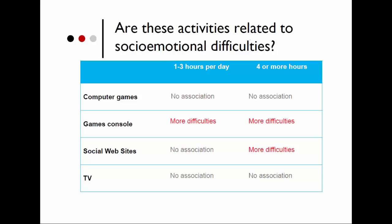Looking at socio-emotional difficulties — the low wellbeing part of the scale — we see different patterns. There are no associations for any amount of playing computer games, but those who played games consoles more than one hour a day had more difficulties compared to those playing less than an hour. Unlike the social networking and happiness finding, we don't see an association for the moderate amount of social networking — one to three hours — but those on social networking sites for four or more hours per day had more difficulties. There was no association with television here, where we did see a slight association with happiness.